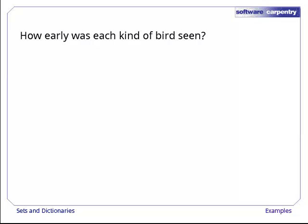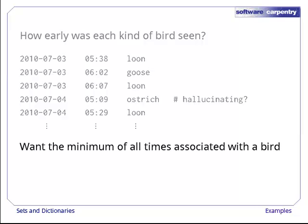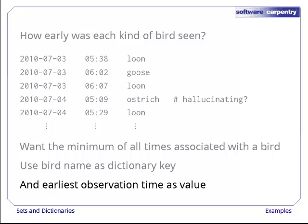Let's start with the question, how early in the day did we see each kind of bird? Our data looks like this, the date and time of the observation, the bird's names, and an optional comment. We want the minimum of all the times associated with each bird name. We'll use a dictionary with the bird name as the key, and the earliest observation time as the value.